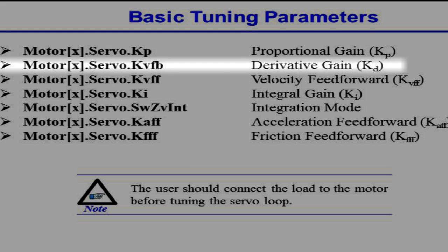The next parameter is the derivative gain, also called kvfb or kd. This gain multiplies the negative of your motor's speed, effectively dampening the motor's motion. It serves to limit uncontrolled oscillation in the motor's motion, thereby stabilizing the motor. Thus, it is natural to choose a kp sufficiently large to produce the desired bandwidth, and then damp the response with kd to make it more stable.